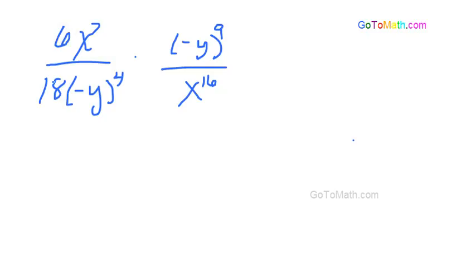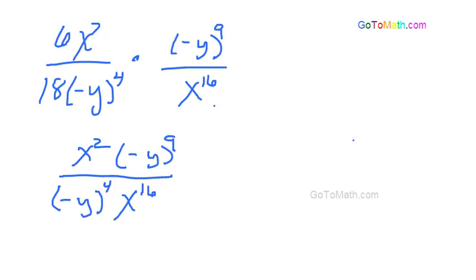We have the 6 and the 18 obviously can reduce down. We got 6 goes into 6 one time, 6 goes into 18 three times. So I'm just going to write it like this first. We'll go ahead and just reduce that part and then we'll just rewrite. So we drop the dot and multiply the numerators and the denominators together.